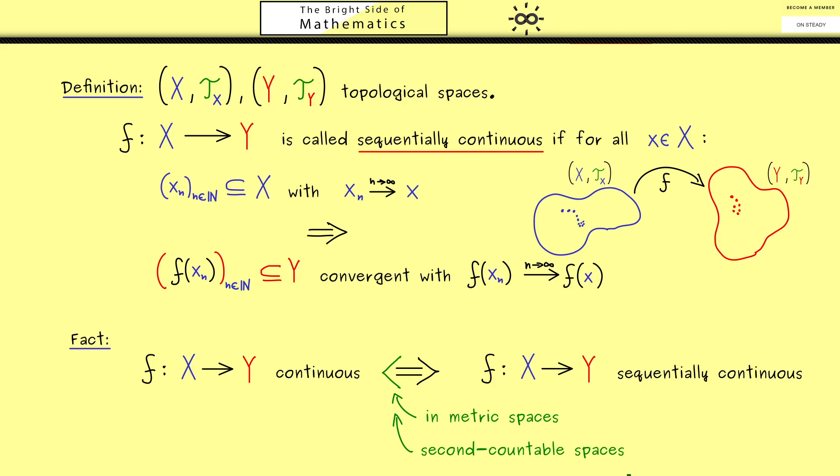However, we didn't discuss them but we discussed the second countable spaces. And because they form a subset of the first countable spaces, we also have the equivalence for the second countable spaces. And this will be the important thing when we discuss manifolds later.